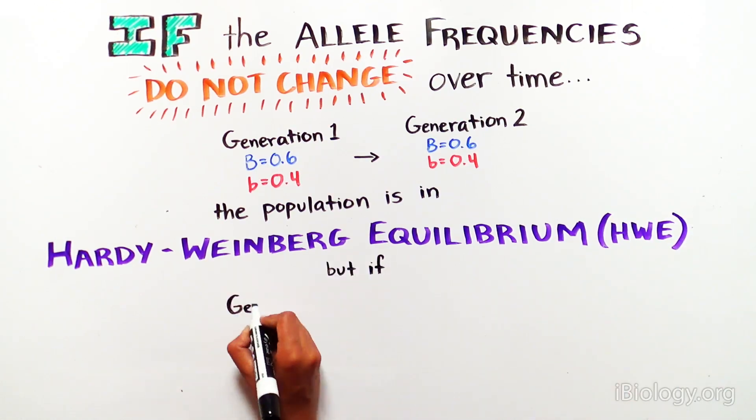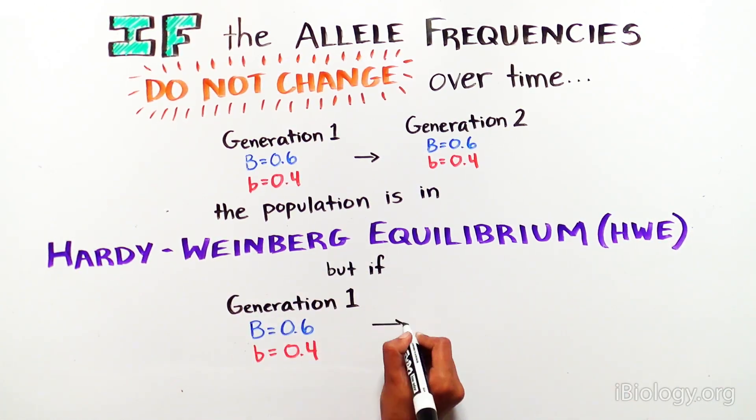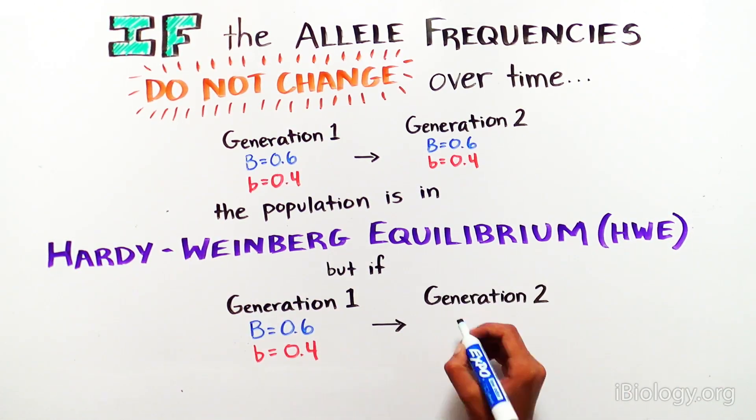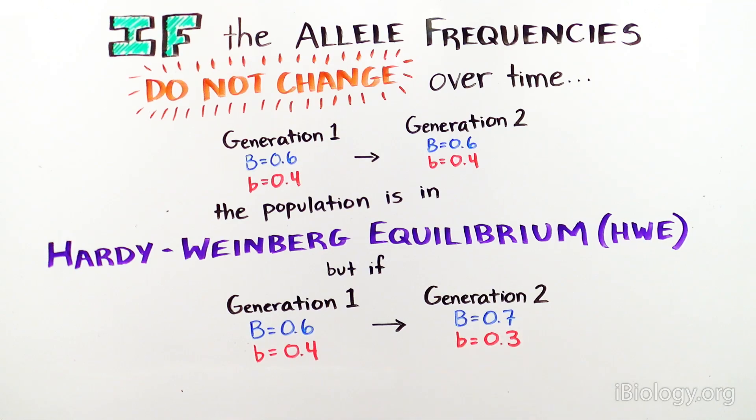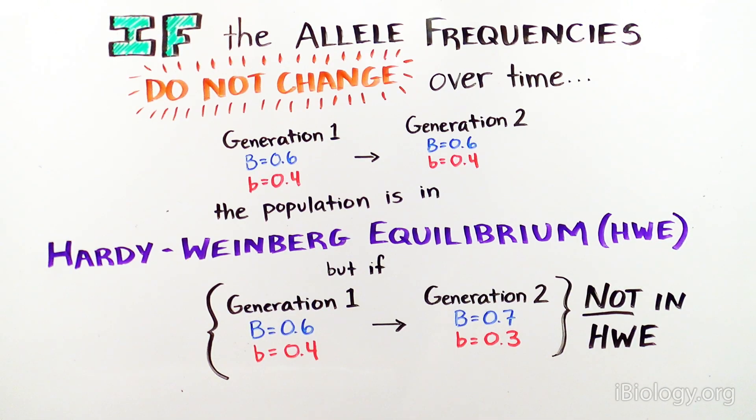In contrast, if the allele frequencies do change over time, the population is not in Hardy-Weinberg equilibrium.